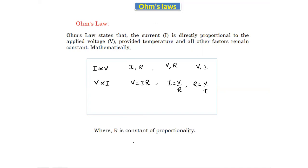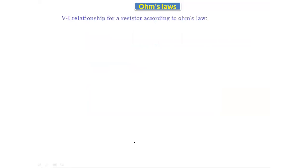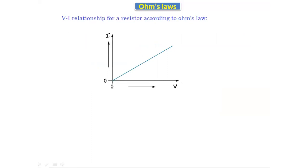Now if we see the V-I relationship for a resistor according to Ohm's Law, we get a graph where current is on the Y-axis and voltage is on the X-axis. As we increase the voltage continuously, the current also increases linearly. Both are increasing linearly, which gives us linear characteristics. Ohm's Law is applicable only for linear elements, because increasing voltage proportionally increases current.